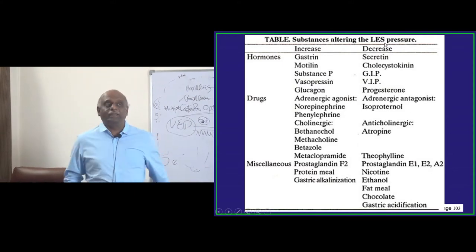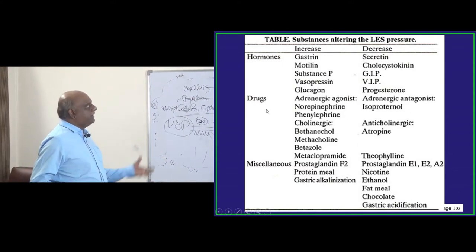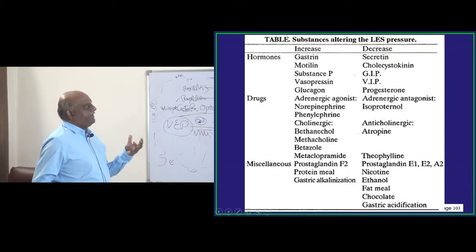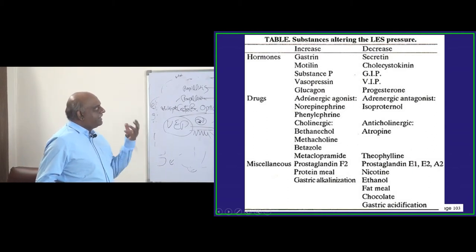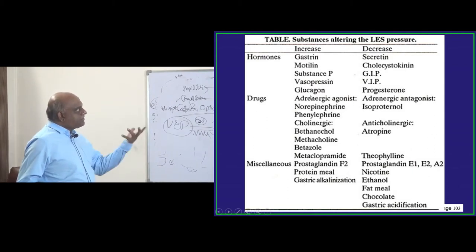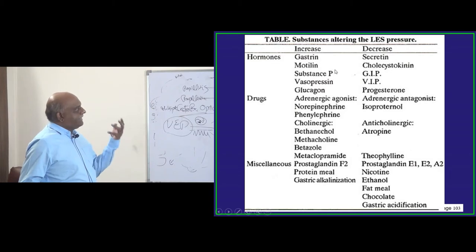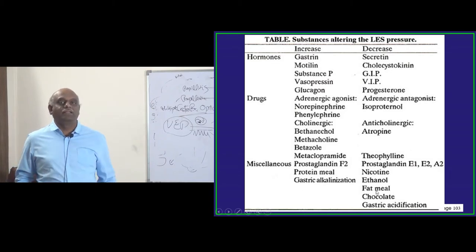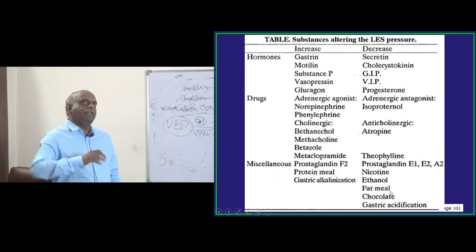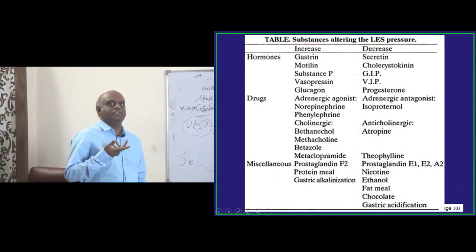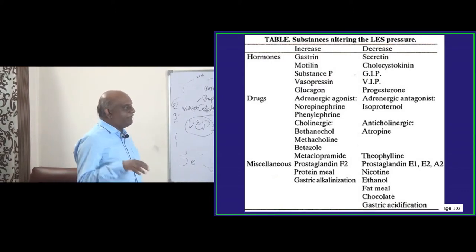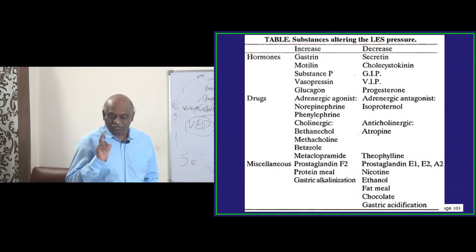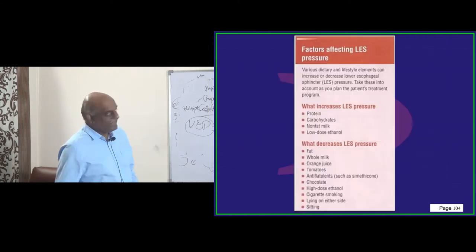Whereas acetylcholine, bethanechol, methacholine — all these cholinergic drugs — and norepinephrine, adrenergic agonists, vasopressin, motilin, gastrin, prostaglandin, and proteinaceous meal will increase LES pressure. If you eat a proteinaceous meal, reflux will be lesser. If you eat a fatty meal, reflux will be more. That's what you need to basically remember.